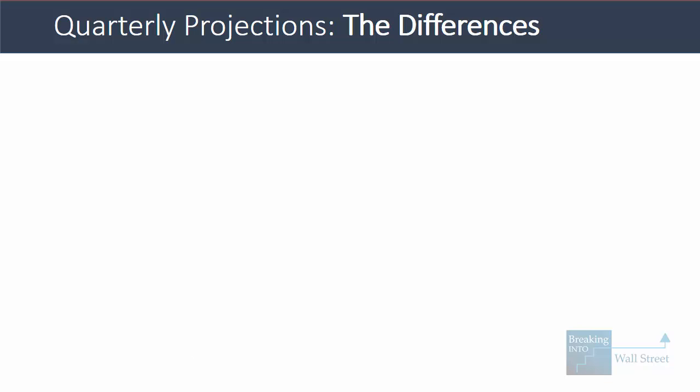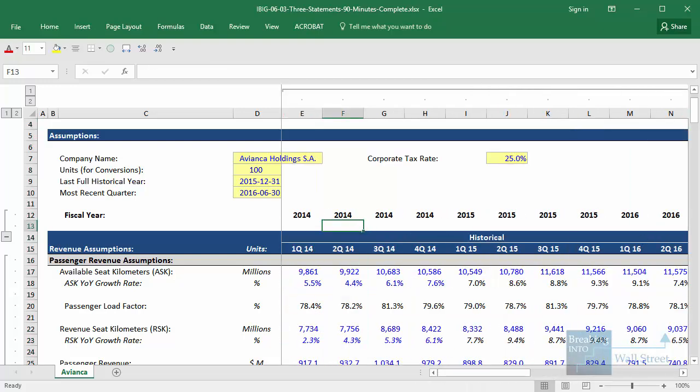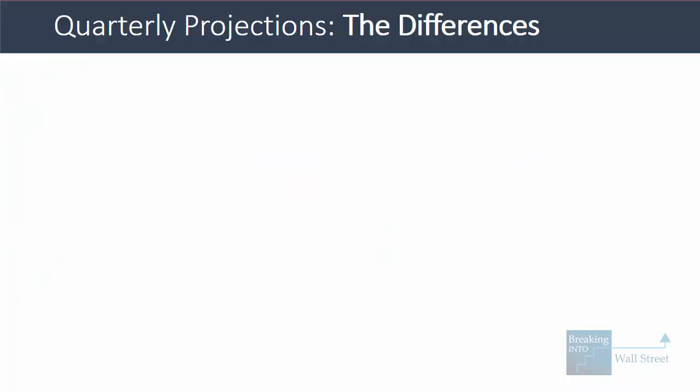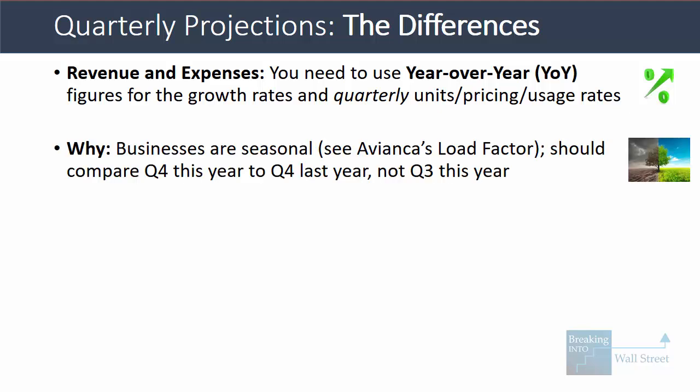Here are the major differences as shown in this quarterly model for Avianca. First off, when you project a company's revenue and expenses on a quarterly basis and use growth rates, you need to use year-over-year figures for the growth rates, and also make sure that you use quarterly figures for the units sold, the pricing, and the usage rates. The reason is that businesses are seasonal, which is the whole reason why we're creating quarterly projections in the first place. So if we look at Q4 of this year, we should compare it to Q4 of last year to get the growth rate — not to Q3 of this year. That defeats the whole purpose of creating this type of model.